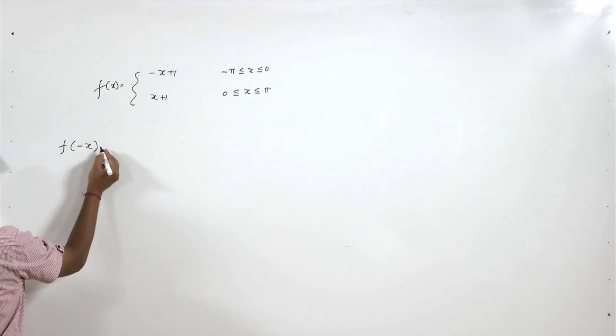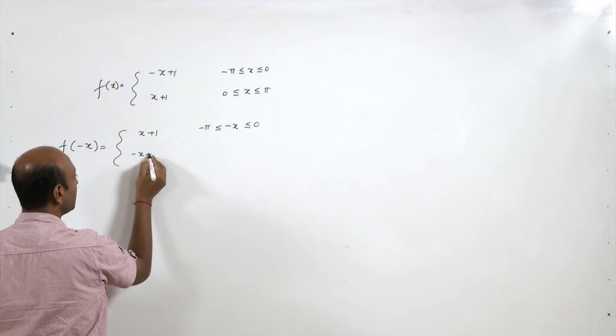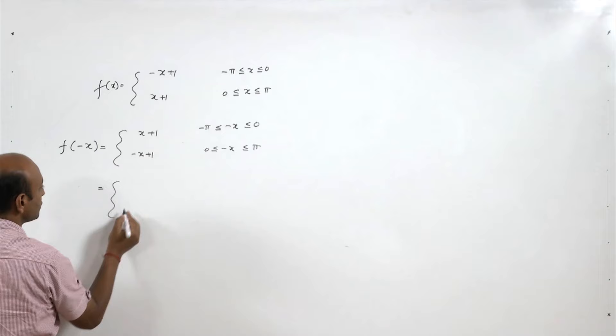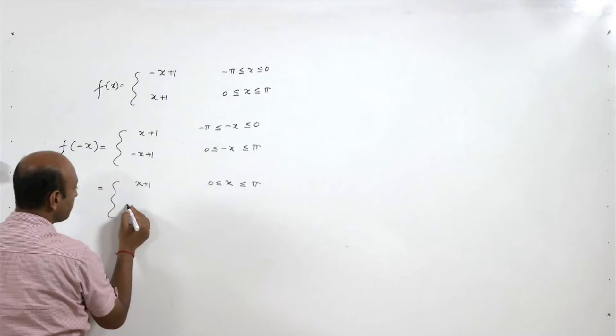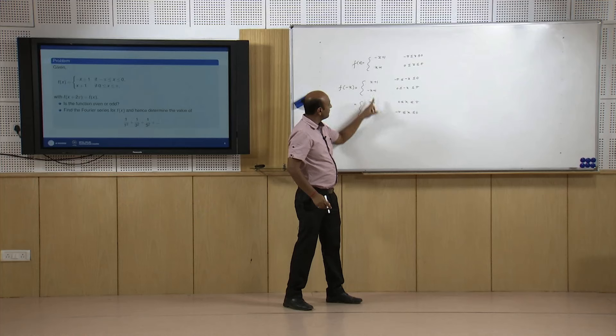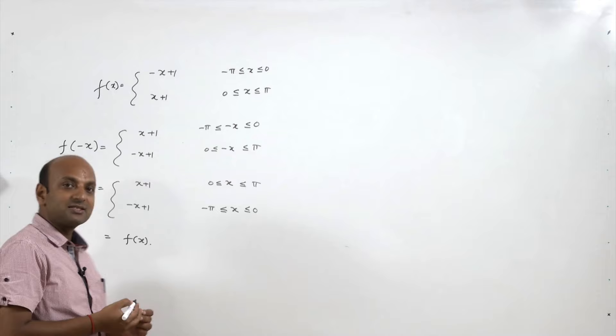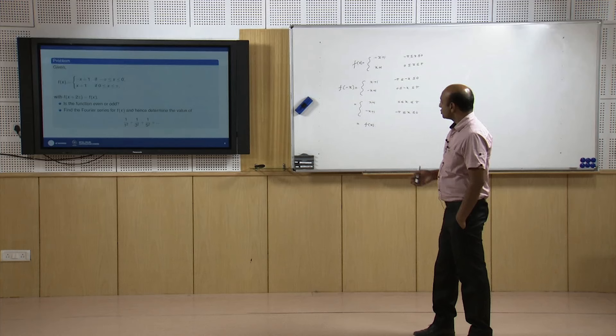Replacing x by -x: f(-x) = x + 1 when -x lies between -π and 0 (i.e., x between 0 and π), and f(-x) = -x + 1 when x is between -π and 0. So from -π to 0 it is -x+1, and from 0 to π it is x+1 — which is the same as f(x). Hence this is an even function.